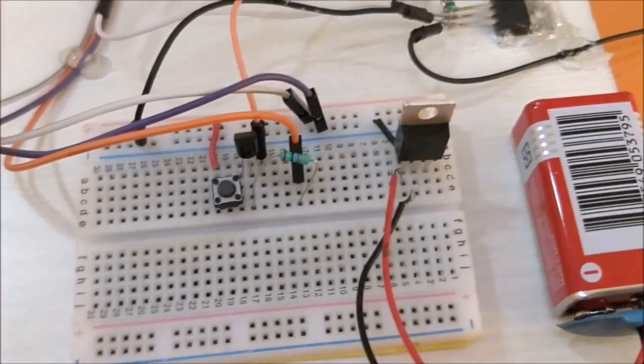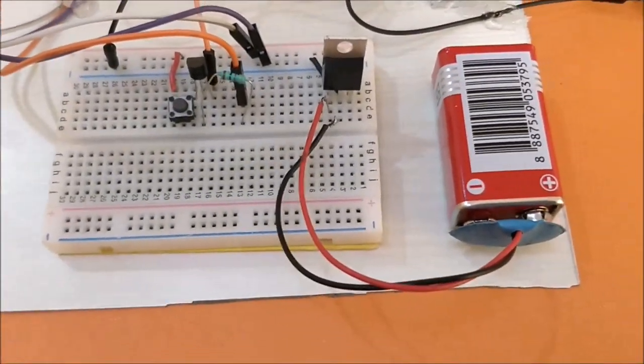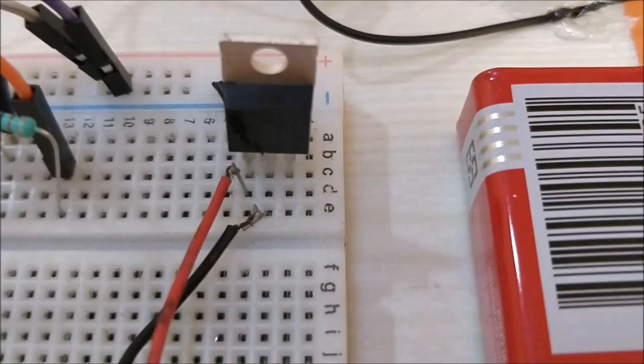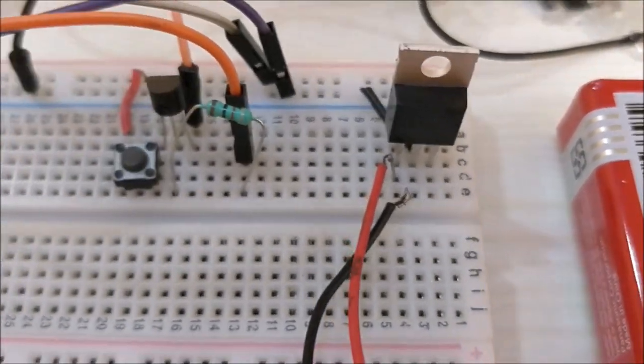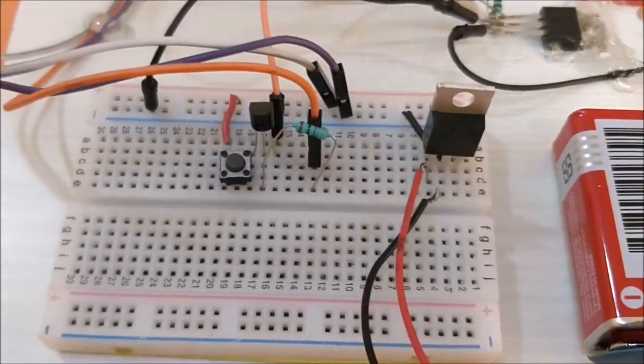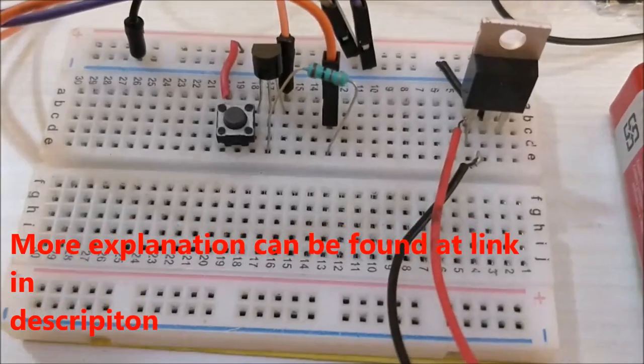The whole breadboard is powered by a 9V battery through a 7805 which regulates 5V for the transistor as well as the MOSFET.